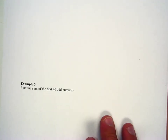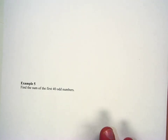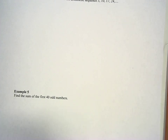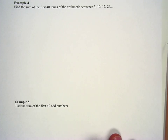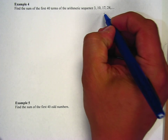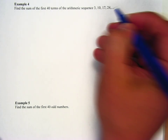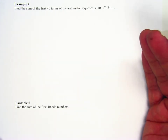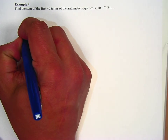We're going to do a few examples. The first example says: find the sum of the first 40 terms of the arithmetic sequence 3, 10, 17, 24. We don't know the last term, so we'll use the formula S_N = (N/2)(2·A₁ + (N−1)·d).